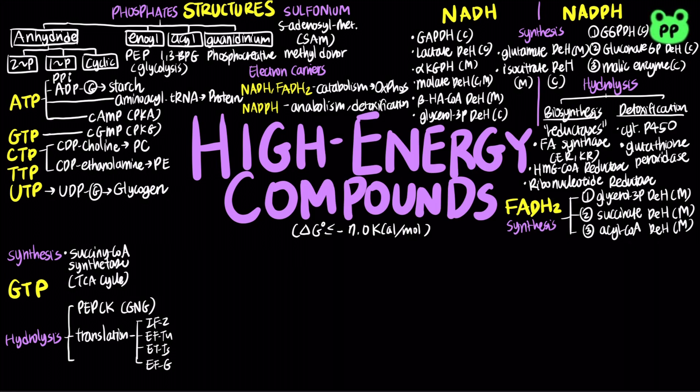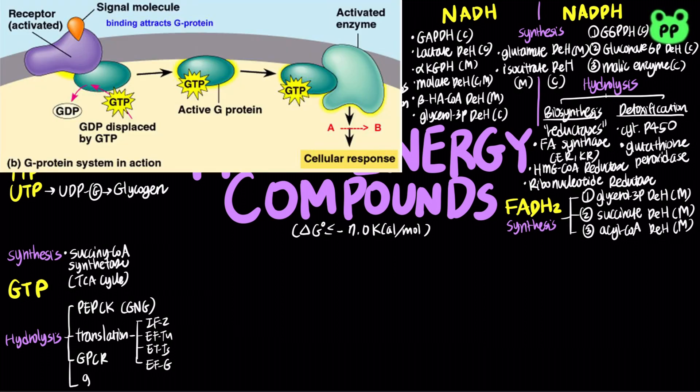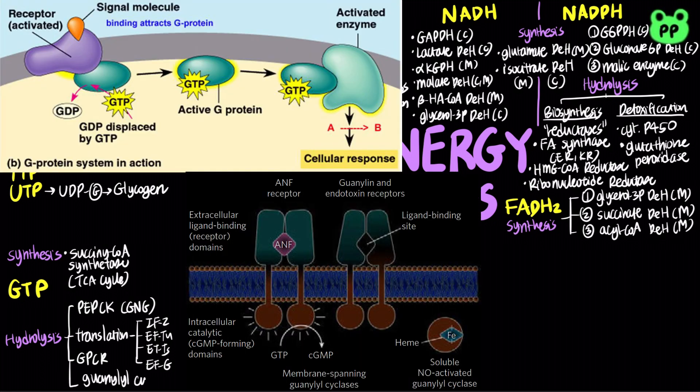Hydrolysis of GTP also functions in signal transduction, including activation of G-protein coupled receptors, as well as guanylyl cyclase, which generates cyclic GMP.